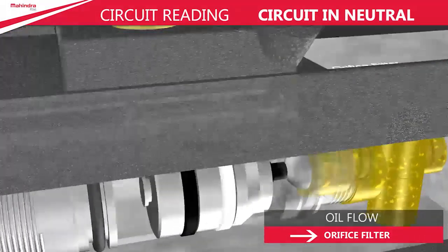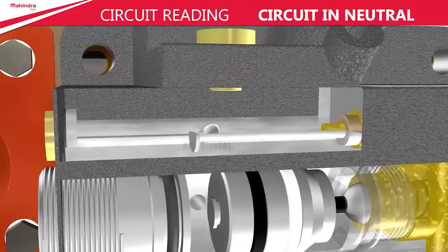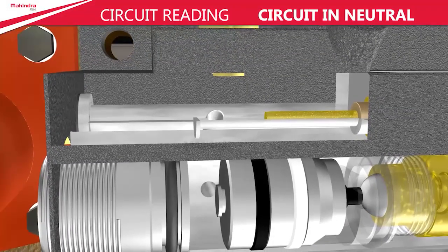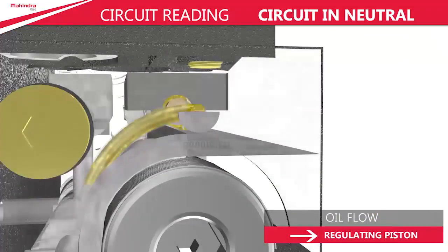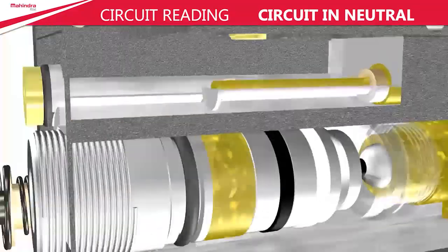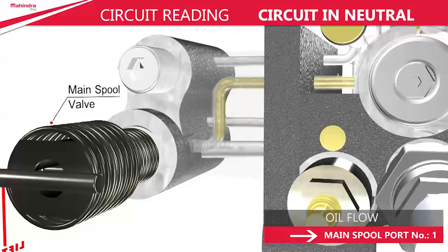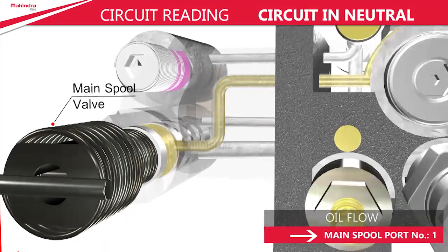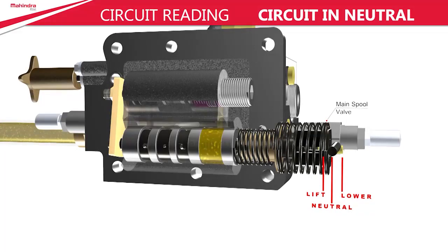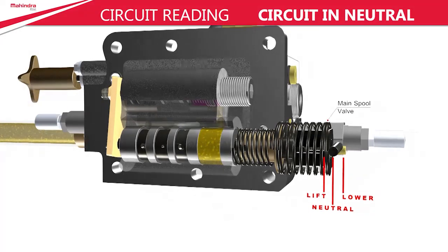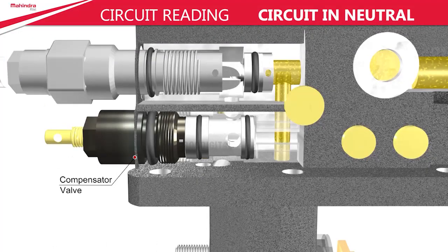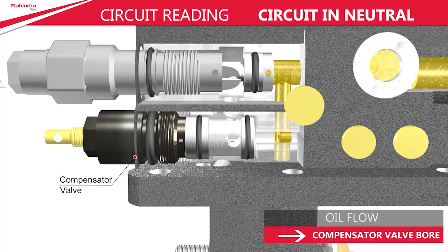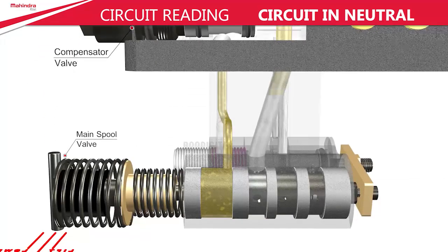The oil finds a path towards the orifice filter and keeps flowing through the orifice at a constant rate to a passage provided in between the regulating piston and regulating plug, up to the main spool port number one, where the oil gets stopped. Thus, the oil finds another path through the orifice filter.